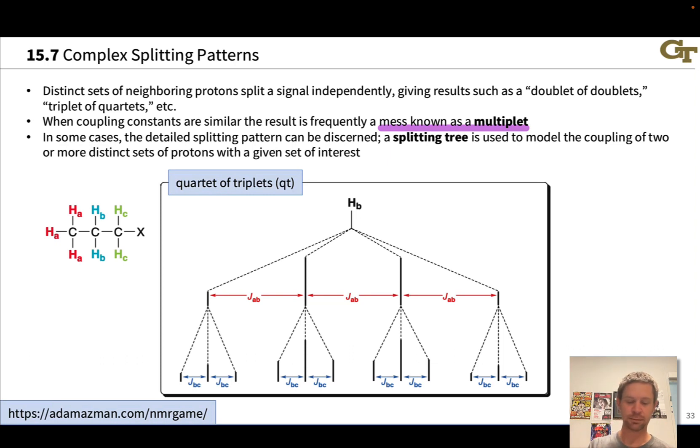Let's imagine we were interested in the splitting pattern of the signal for HB. HB has two distinct sets of neighboring protons, the methyl protons HA and the methylene protons HC. In this particular example, the coupling constant between A and B is greater than the coupling constant between C and B. If we just consider the effect of HA on HB, the n plus one rule says we're going to get a quartet based on these three neighboring protons in the methyl group. That is in fact what we see in the splitting tree.